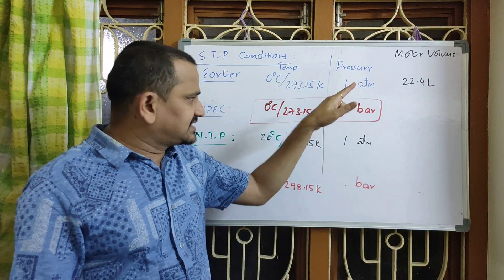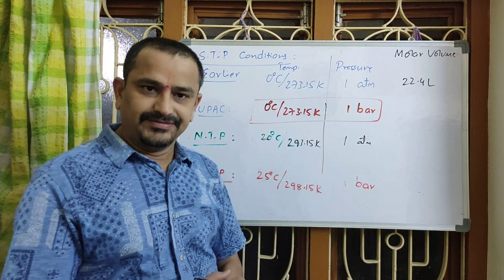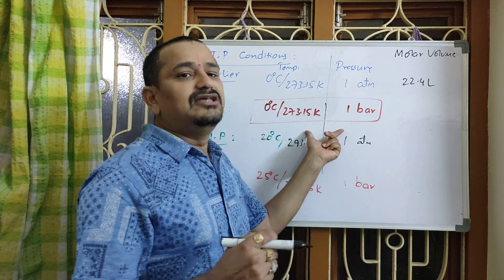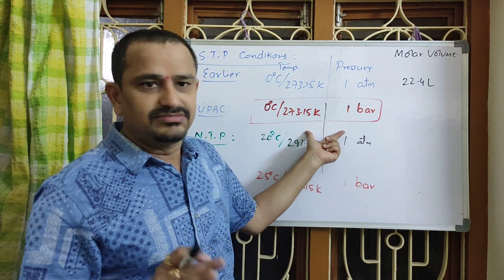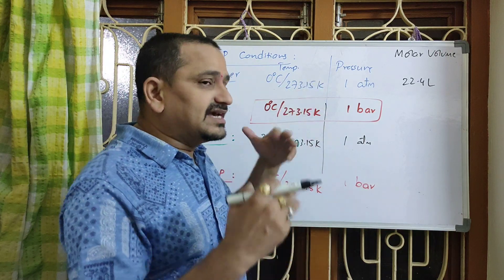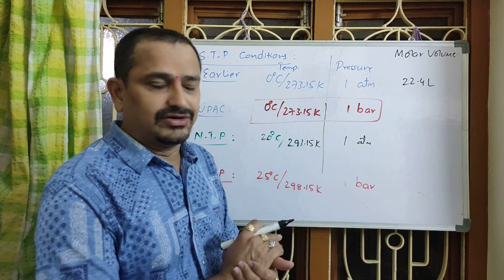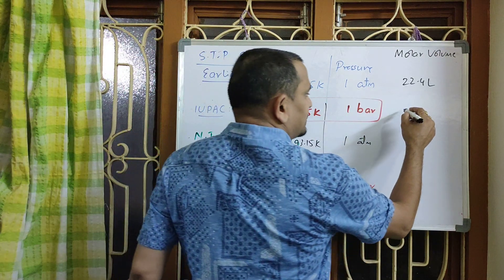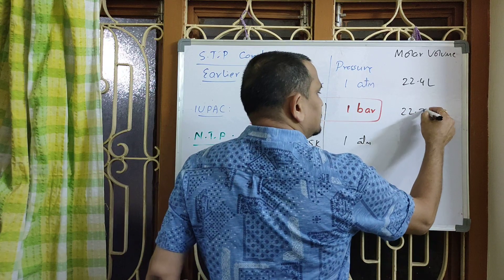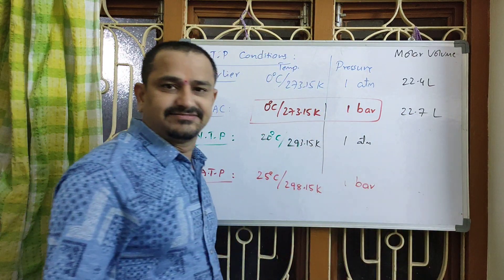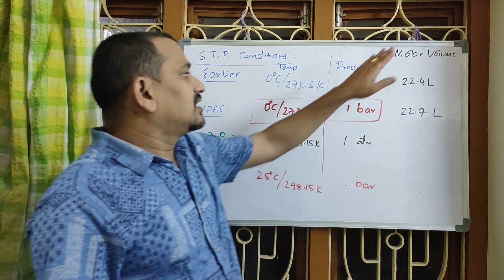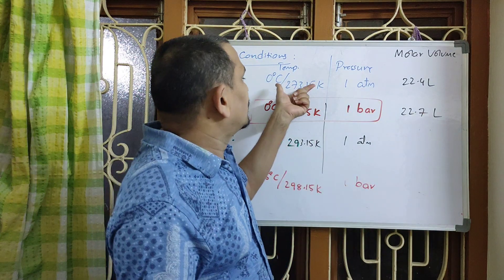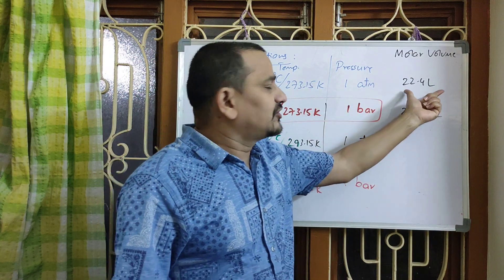In many publications they are still printing 22.4 liters. So by looking at the value, we can easily predict whether they are following the old set or the IUPAC set of STP conditions. There is no need to get confused — we can easily assess which scale they are following. If you follow IUPAC conditions of STP and calculate the volume, it will be 22.67, approximately taken as 22.7 liters.